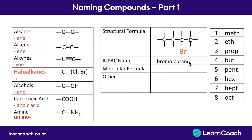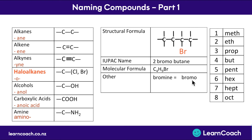We also have to specify which carbon the halogen is attached to. We always count from the closest end. In this case the bromine is on the number two carbon, so the final name is 2-bromobutane. The molecular formula for this one has four carbons, nine hydrogens, and a Br for bromine. Remember: bromine becomes bromo and chlorine becomes chloro, and both go in front of the name.